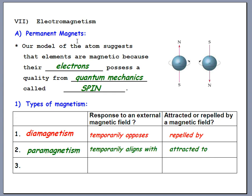Diamagnetism is a temporary effect — as soon as you take the material out of the magnetic field, that opposing field goes away. A diamagnetic material will always be repelled when near another magnet. The opposite is paramagnetism: also a temporary effect, but when a paramagnetic material is placed inside a magnetic field, it creates its own weak field that aligns with the external field, causing attraction.